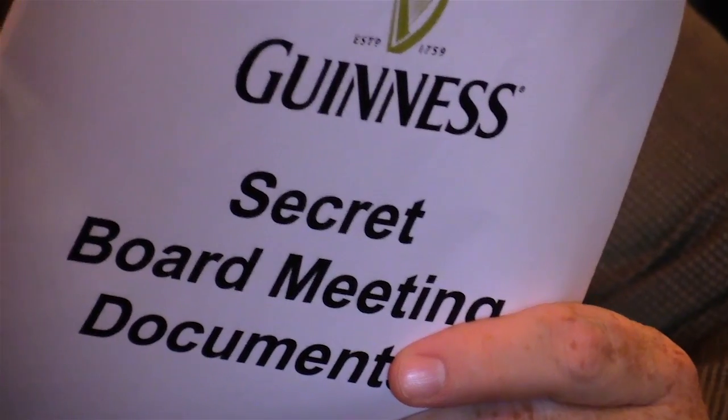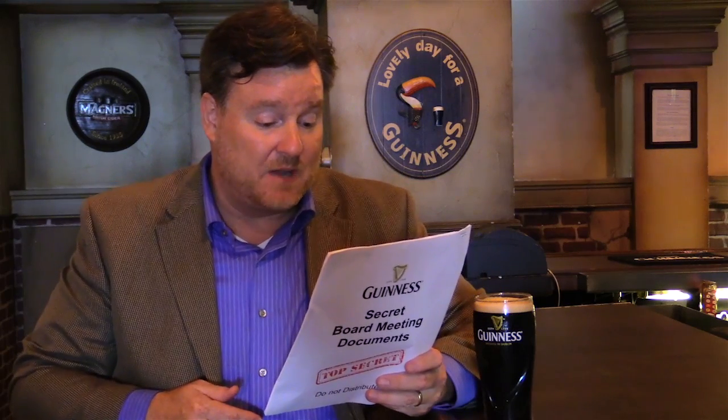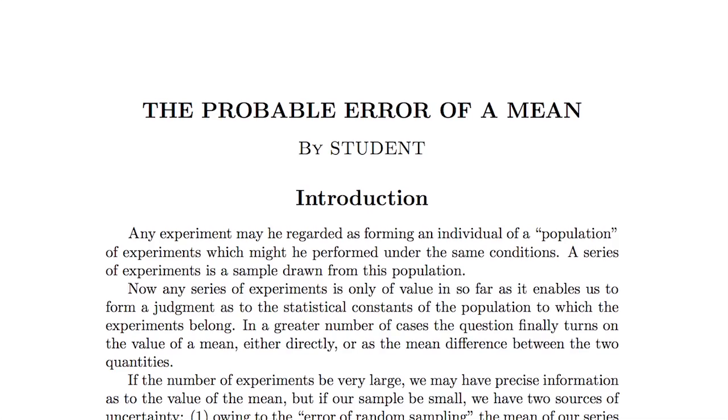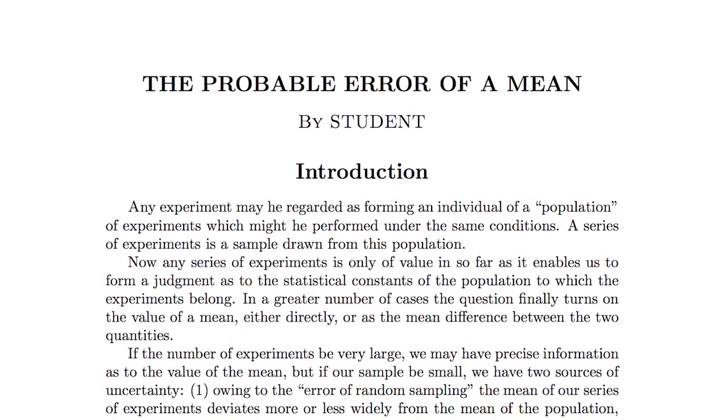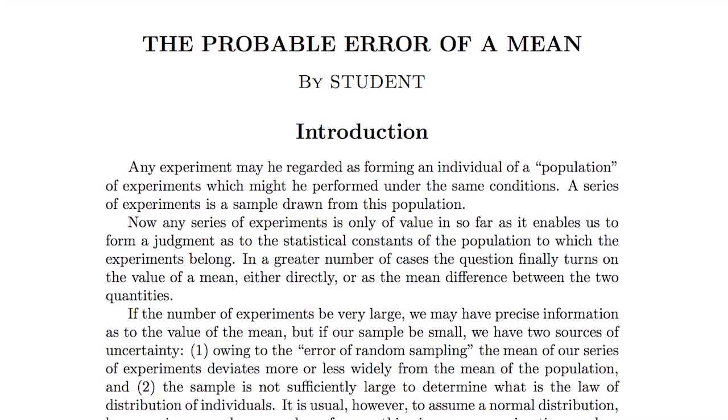Other people will tell you that Gossett published anonymously and that Guinness never found out until after his death. But according to the minutes of the Guinness Board, Gossett was granted permission to publish with the stipulation that he used a pseudonym. And so in 1908, William Seeley Gossett published two articles in Carl Pearson's journal Biometrika under the pseudonym Student.